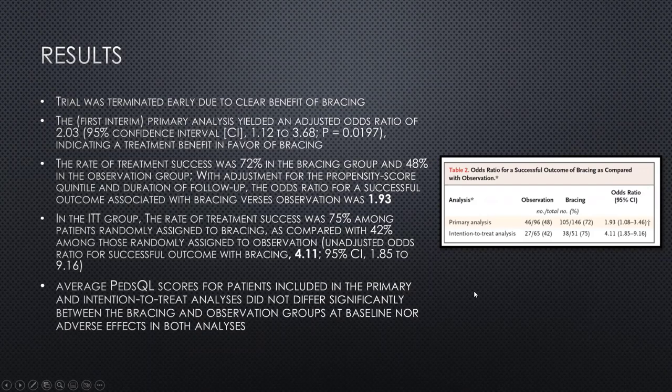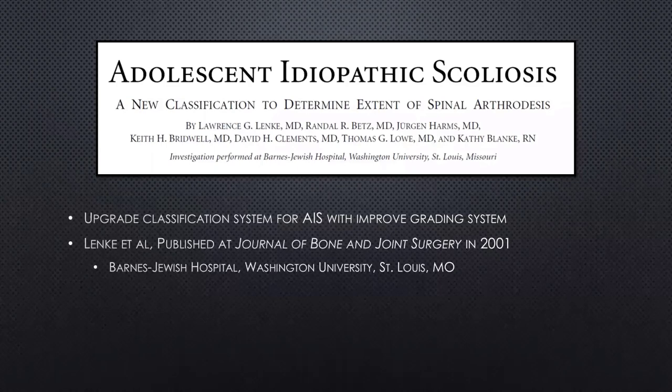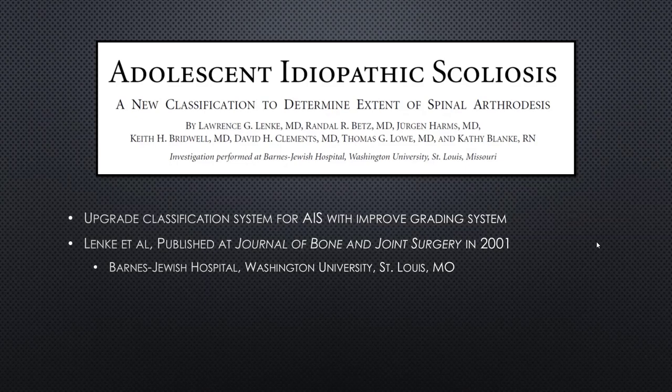The next paper is a jump back in time — the original Lenke classification paper published in 2001 in JBJS, out of Washington University in St. Louis, by Dr. Lenke et al. This was their proposal of a new classification system for AIS with the goal of determining the extent of spinal fusion. Orthopedics is notorious for classification systems, but the ones worth knowing are those that guide treatment or prognosis — a purely descriptive classification is useless.